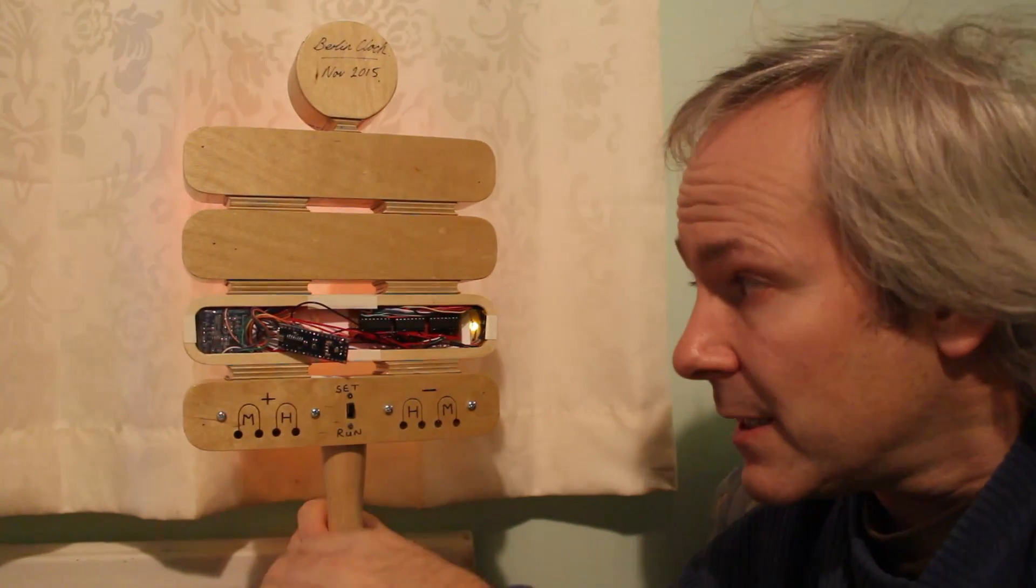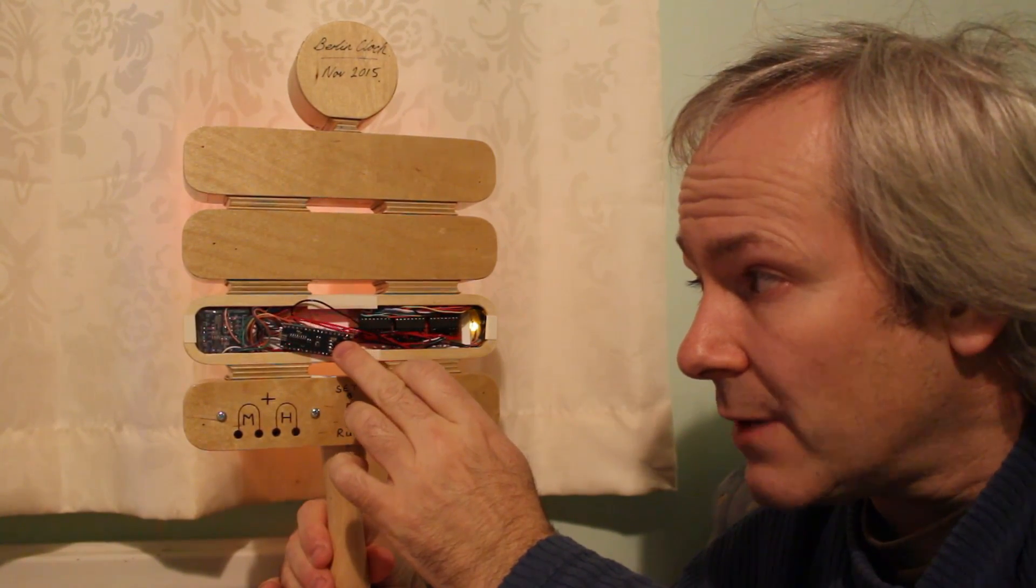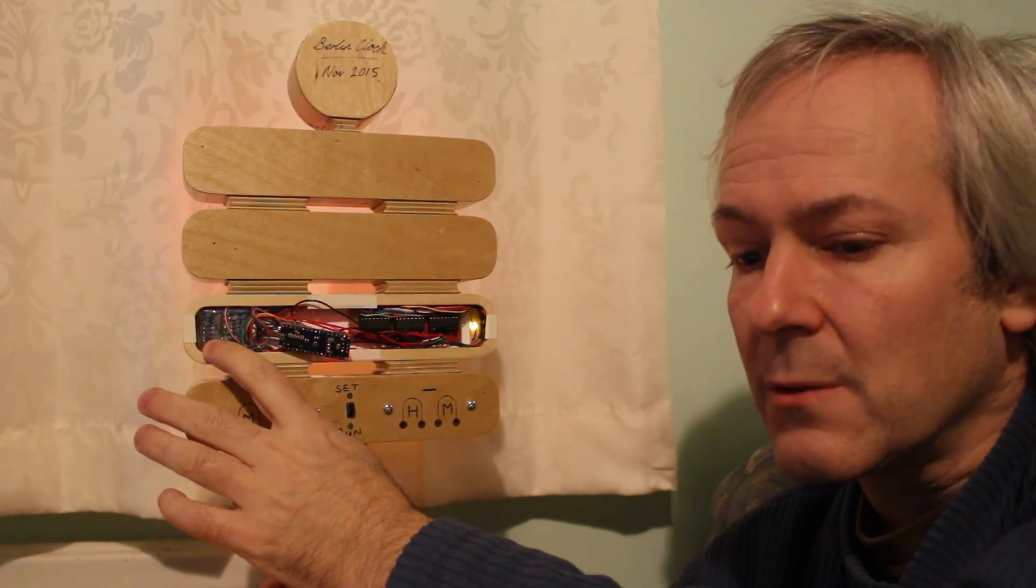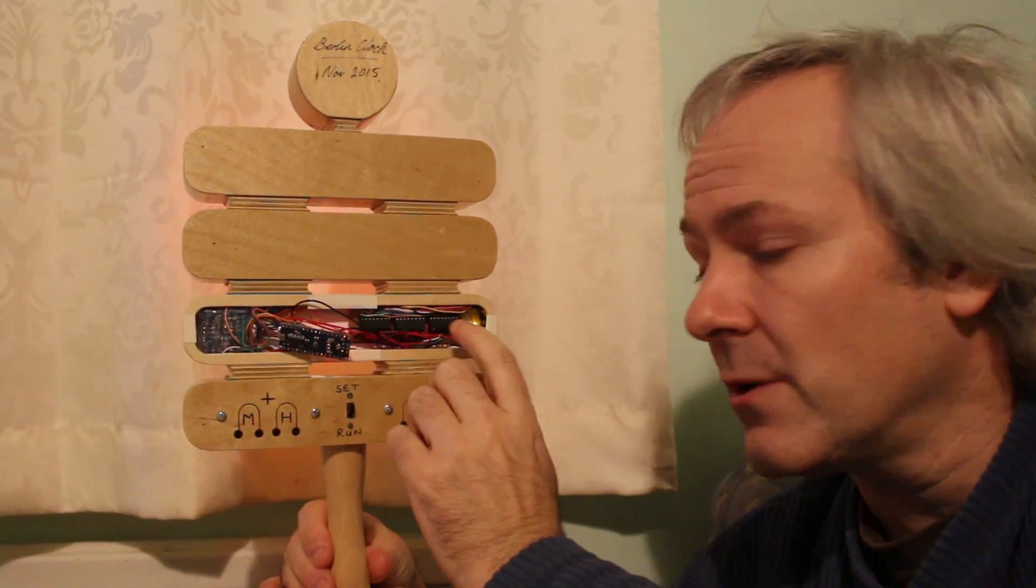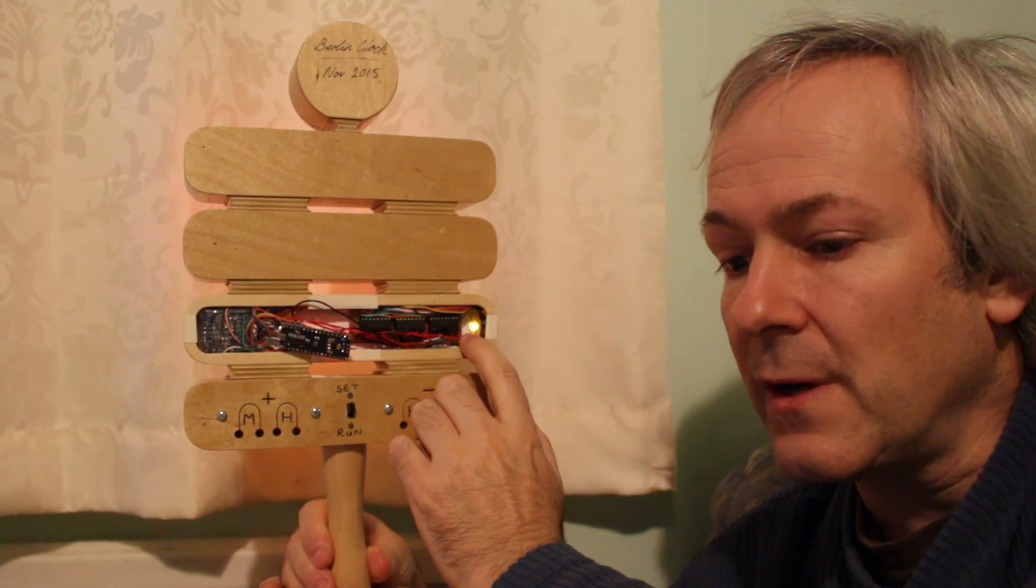So just showing you around the back, you've got the Arduino Nano driving everything. You've got a real time clock, which is the DS1307, and you've got three serial shift registers, the 595.